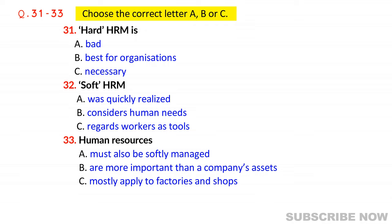That leads us to the modern soft HRM model, where the staff or human resources are now considered one of the most important assets a company may have — an asset just as tangible as the factories, shops, and money in the bank, and something that needs to be managed in a soft way as well as hard.